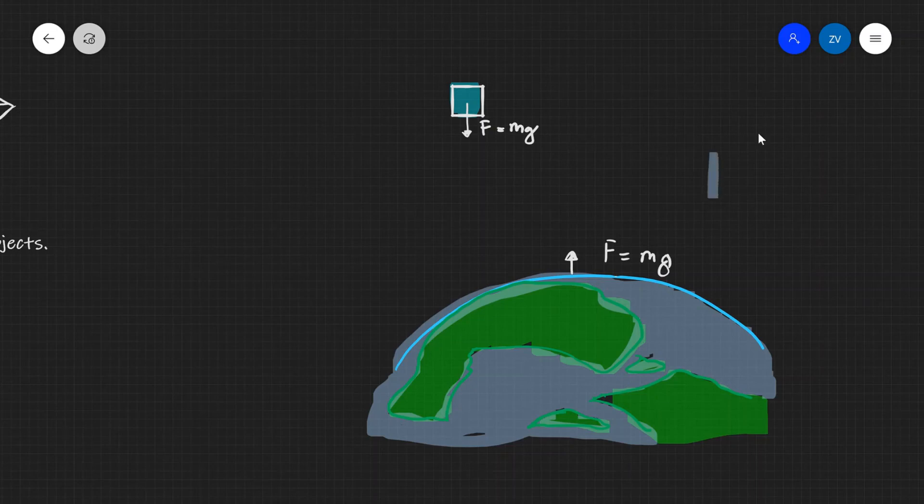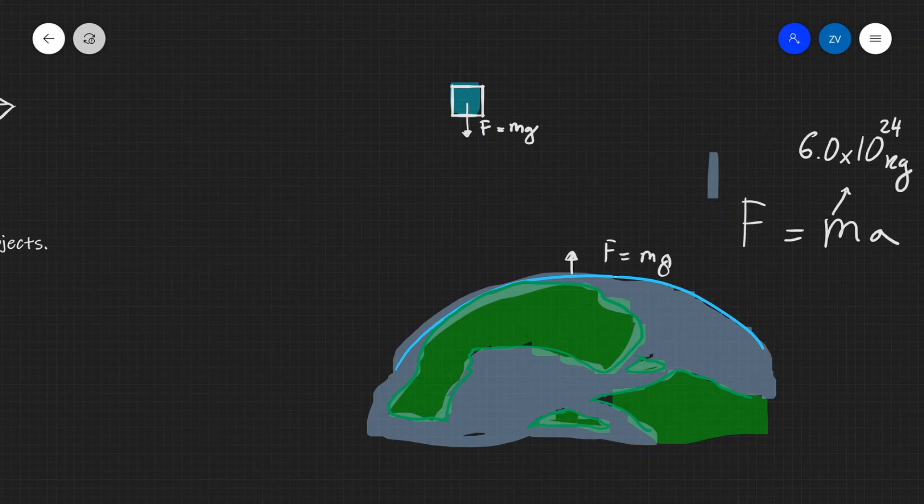So if it experiences a force F, let's say 10 newtons, but let's just be general. Let's say that F is some force that the earth experiences. This is going to be equal to ma, assuming that's the only unbalanced force, and the mass of the earth is huge. In fact, the mass of the earth is approximately 6.0 times 10 to the power of 24 kg.